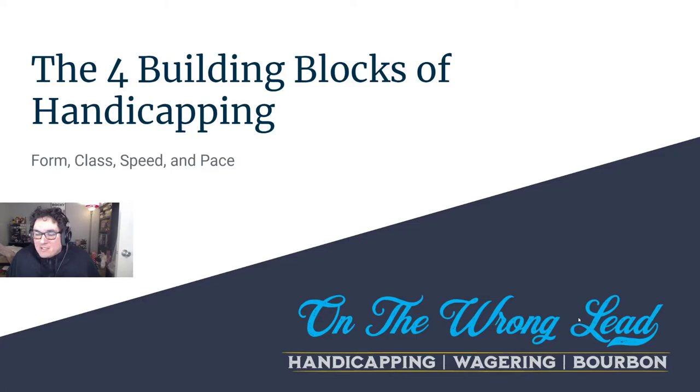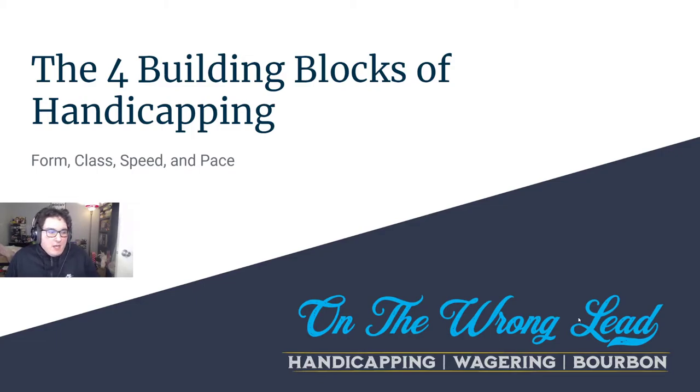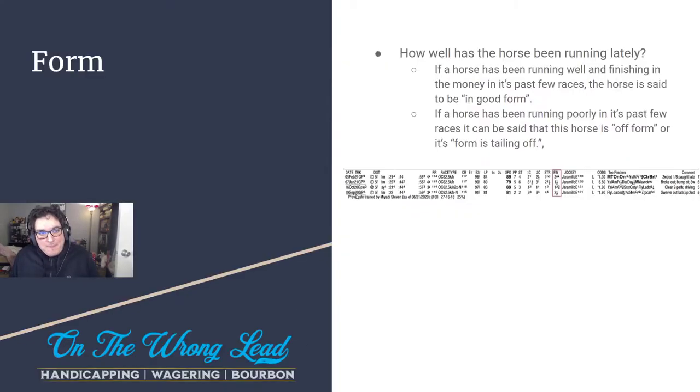Alright guys, it's Josh here with On the Wrong Lead and we are back with another one of our intro to horse racing videos. We are going to be talking about the four building blocks of handicapping today. We have a little presentation here and we're going to talk about these four key concepts when it comes to looking at a race — those four things being form, class, speed, and pace.